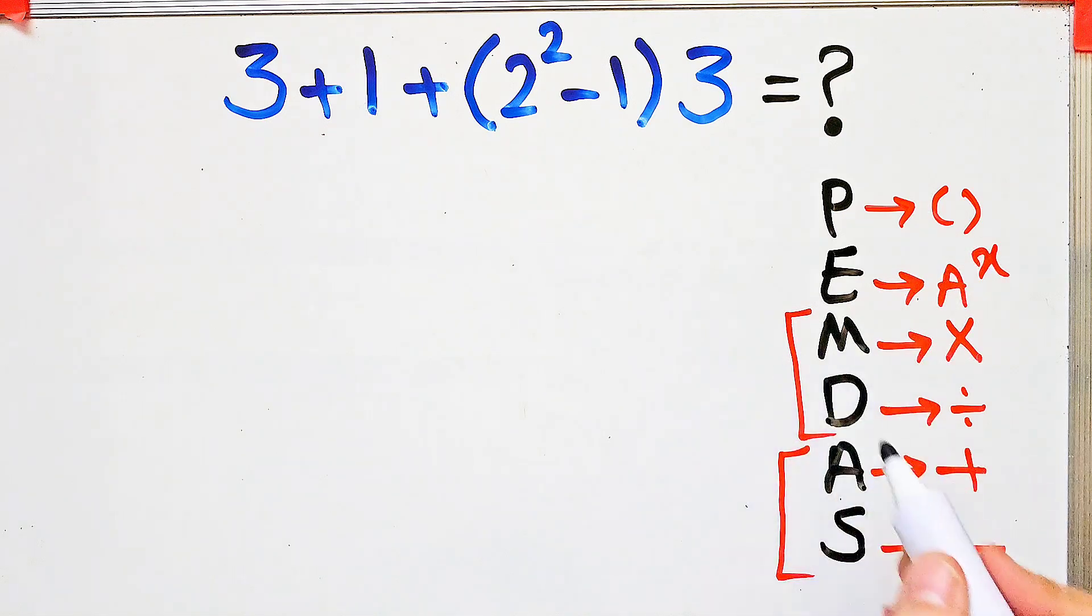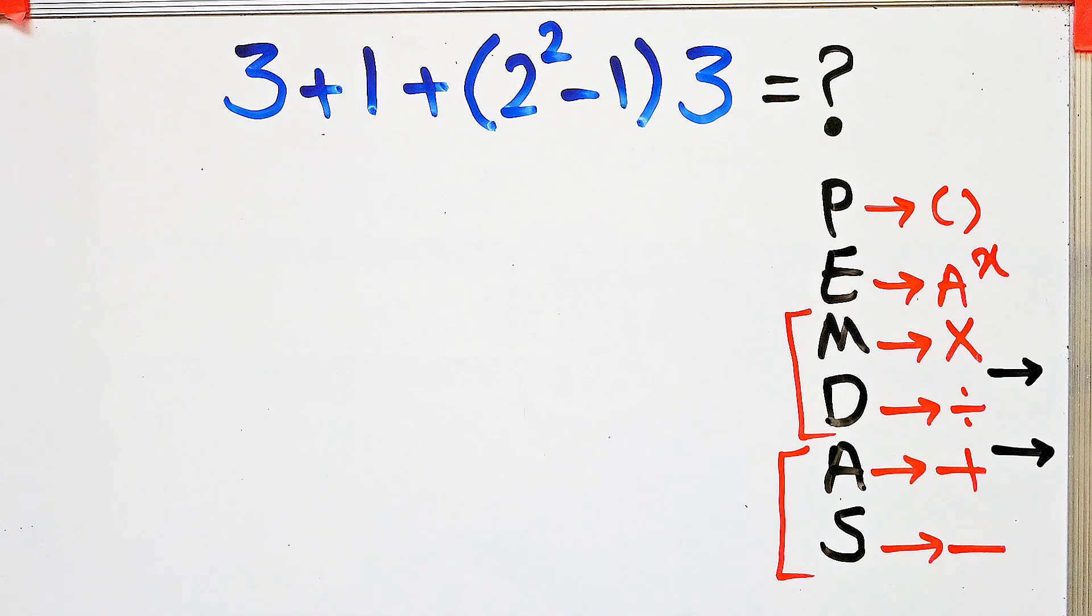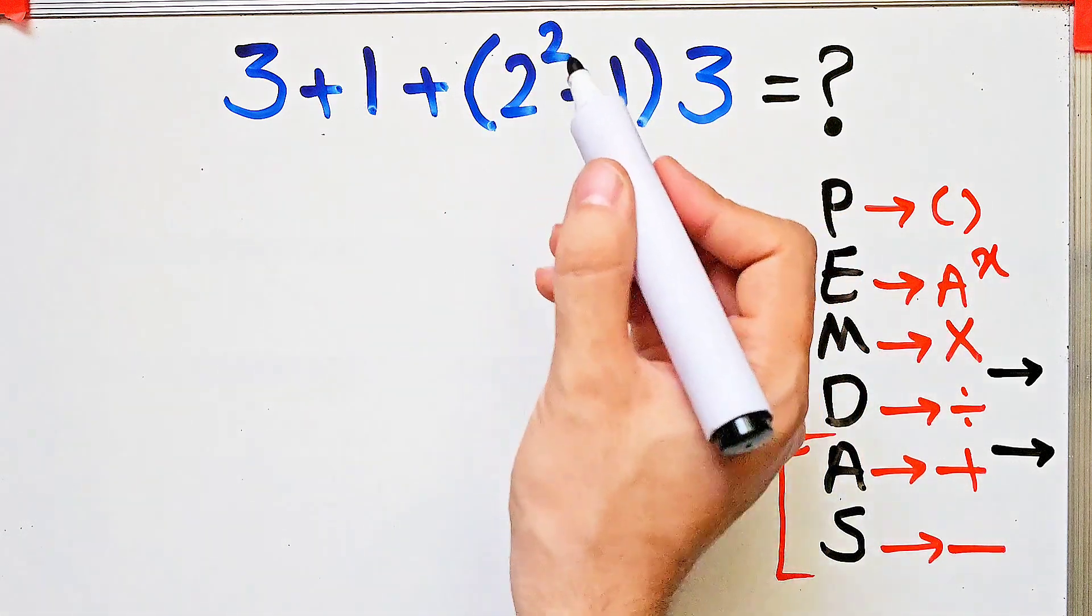When we have both in an expression, we start from the left and simplify the question. According to the PEMDAS rule, first we simplify the parentheses. We have addition, parentheses, exponent, subtraction, and multiplication.